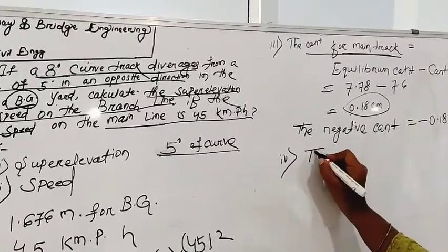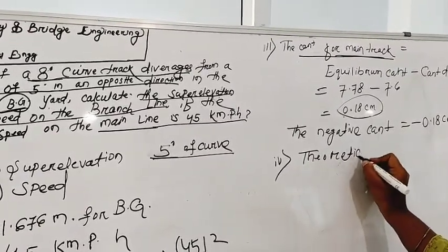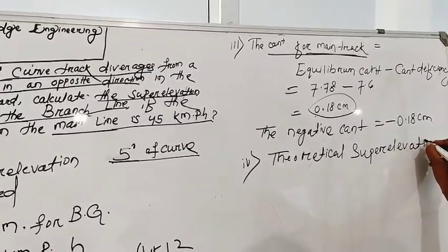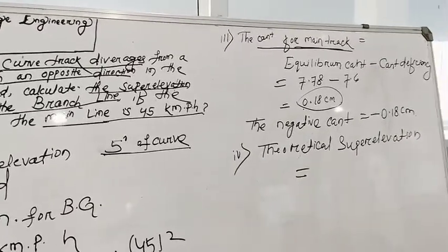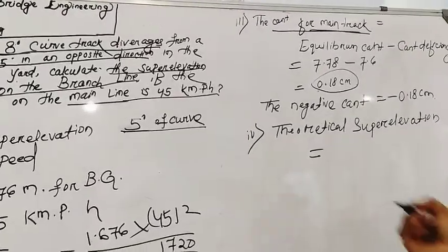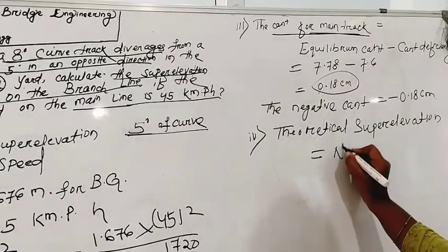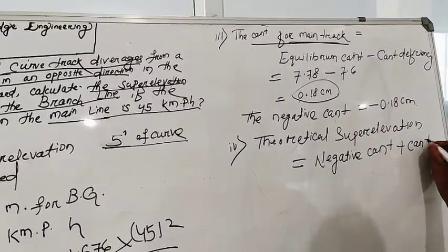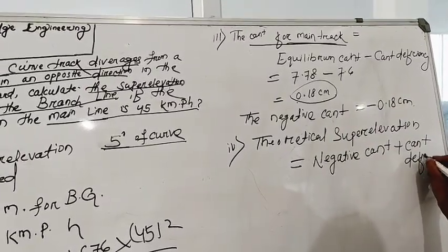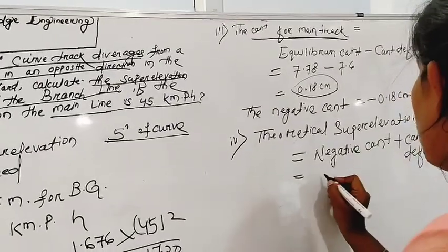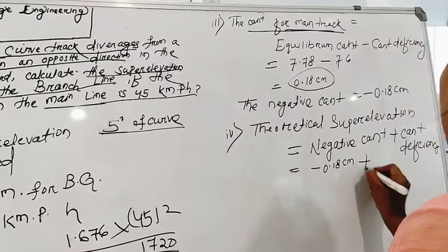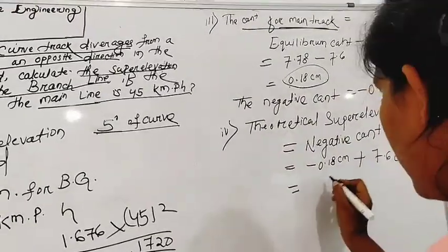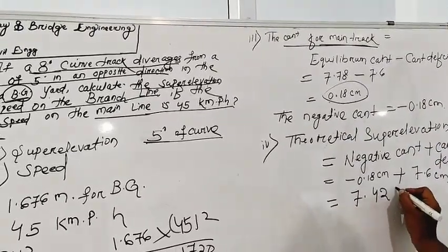Now we calculate the theoretical super elevation for the branch line. The theoretical super elevation equals negative cant deficiency plus the cant deficiency. Starting from 6.28 material calculation, the theoretical super elevation works out to 7.42 cm.